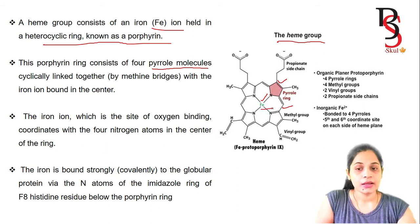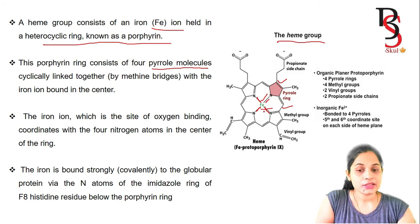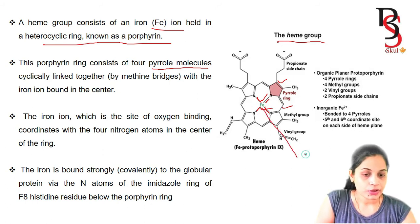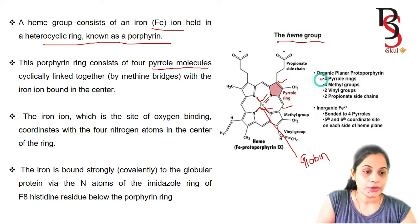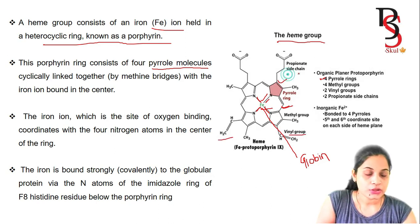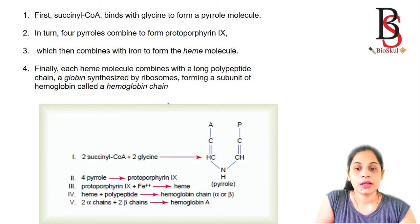Iron is strongly bound to the protein molecule known as globin. The heme group consists of four pyrrole rings joined together by the methyl bridge, with two vinyl groups and two propionate side chains. The iron atom is attached to the protein globin.